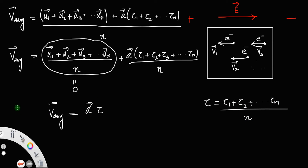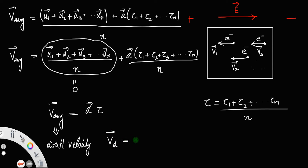This average velocity v-average is called the drift velocity, denoted by Vd. Therefore, Vd = a·τ.